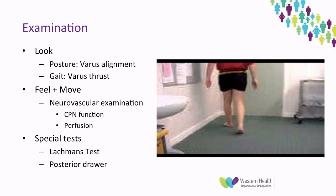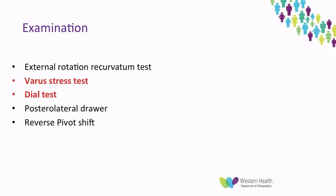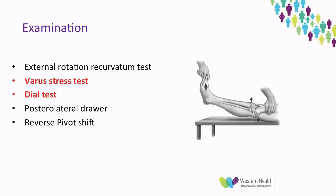In terms of special tests, it's obviously important to elicit any cruciate injuries — a positive Lachman's or a posterior draw. For specific testing of the posterolateral corner, we have a number of tests. The external rotation recurvatum test is one where we stabilise the distal femur on the treatment table and bring the big toe up. A positive test is if the leg goes into recurvatum and the tibia externally rotates — compared to the other side.